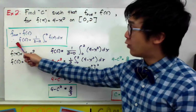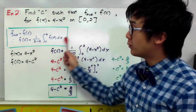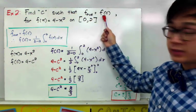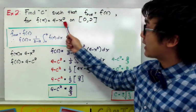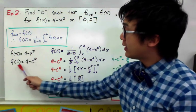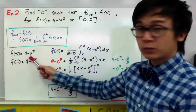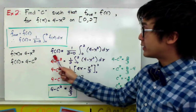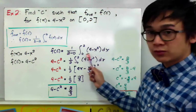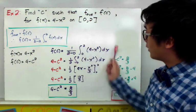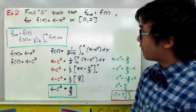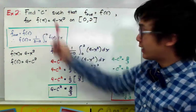We can rewrite our formula as f of c equal to f average. To find the specific function for f of c, we will use f of x equal to 4 minus x squared as our base. Since f of x is equal to 4 minus x squared, we can change f of c into 4 minus c squared by replacing x with c. So we have 4 minus c squared equal to 1 over 2 minus 0 times the integral of 4 minus x squared dx from 0 to 2.